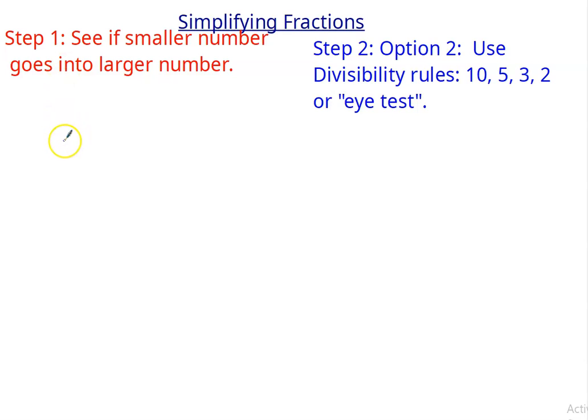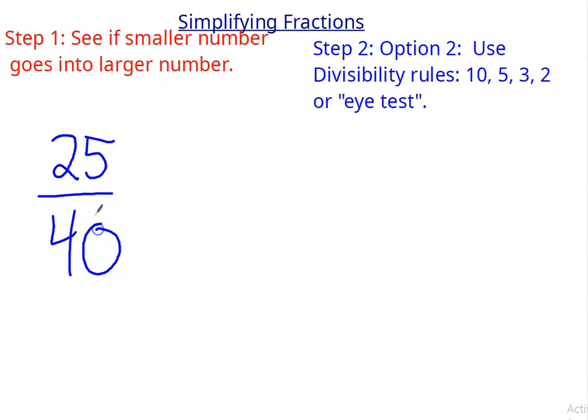Let's do it where I have 25 over 40. We'll start at the 10 rule. Do they both end in 0? No — 40 does, but 25 does not, so it's not a common factor.